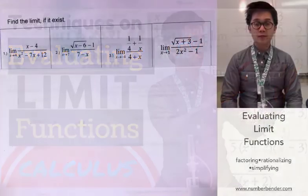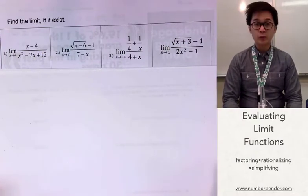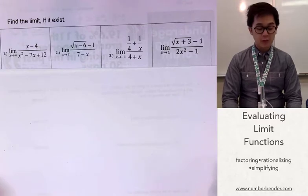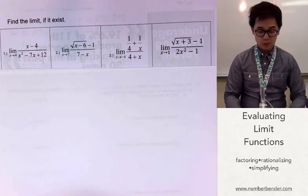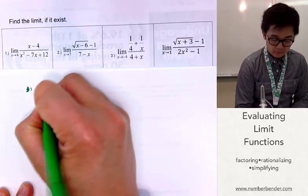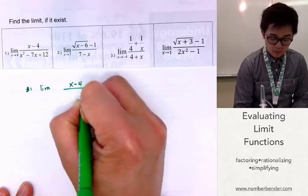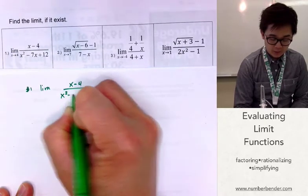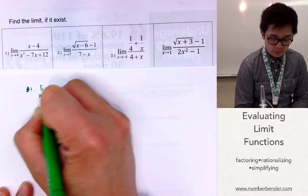Today we're going to be evaluating limits given a function, and we're going to be using some algebraic techniques to evaluate limit problems 1, 2, 3, and 4. So let's start with problem number 1. We have the limit of x minus 4 all over x squared minus 7x plus 12 as x approaches 4.